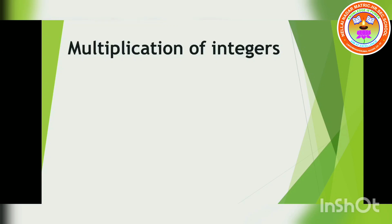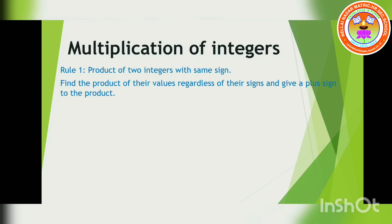Shall we start? Yes. First, there is rule number one: product of two integers with the same sign. When I multiply two integers with the same sign, what will be my answer?